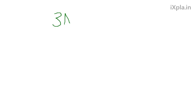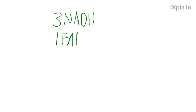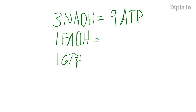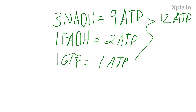Each Krebs cycle forms three NADH — equal to nine ATP — one FADH — equal to two ATP — and one GTP — equal to one ATP. Adding those up gives 12 ATP per cycle. You have two cycles, so multiply by two and you get 24 ATP from the Krebs cycle.